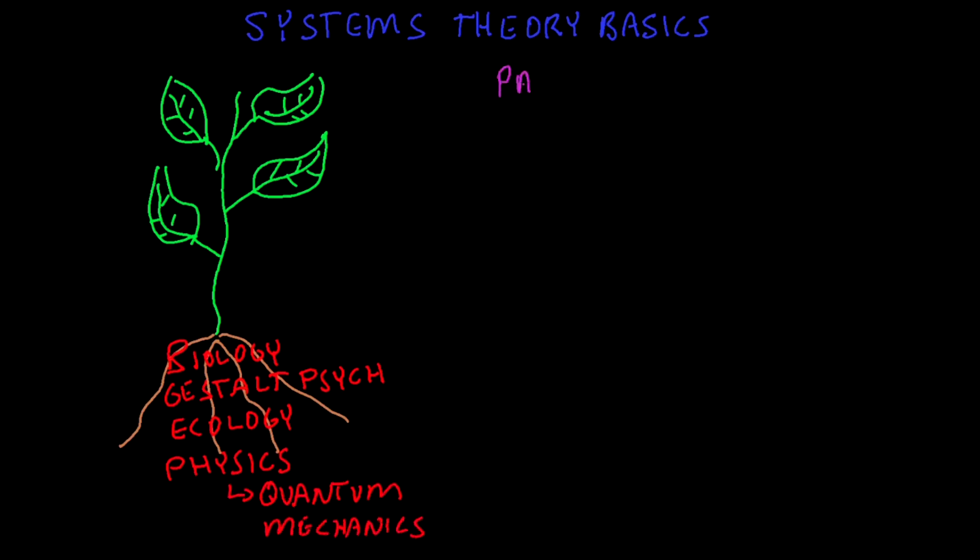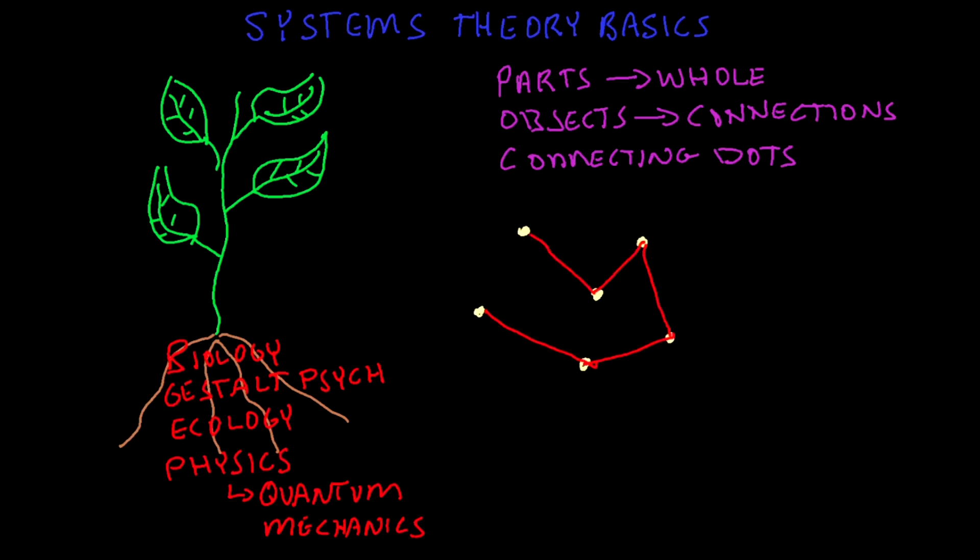Systems theory is about a perspective shift from parts to the whole, and looking at instead of objects, relationships, and connecting the dots, and from measuring to mapping those connections.